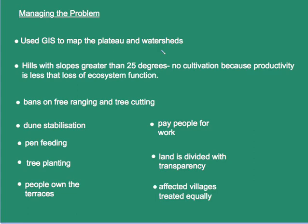GIS was used to map the plateau, so hills with slopes greater than 25 degrees received no cultivation because productivity in these areas was deemed to be less than the loss of ecosystem function. There were bans on free-ranging of animals and tree cutting, pen-feeding for animals, and tree planting. Most significantly, people were given ownership of the terraces, and because of the injection of capital, they were paid for their work. The land was divided with transparency so that the people who participated felt they were being treated fairly, and each village was given the same treatment as every other village in the region.